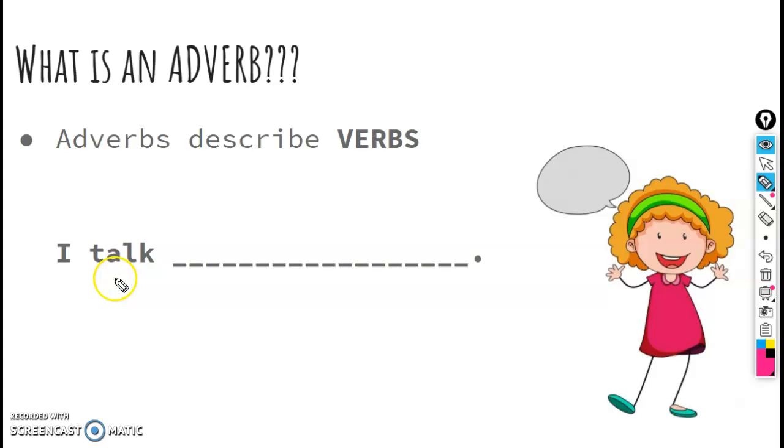I have a sentence here. I talk blank. We're going to see what kinds of words might make sense in this sentence. I notice the word talk is my verb. I know it's a verb because it's an action word. It's something I can do. I can talk. So now I want to think of a word that will describe my talking. So I might talk really. How am I talking right now? Softly? Softly. Softly is an adverb. It's telling me, describing my talking. Softly.